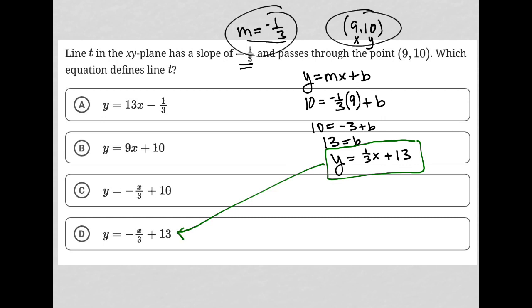They wrote it as negative X over 3. Oh, messed that up. That should be a negative one-third X, right? Negative one-third is my slope. So negative X over 3 is the exact same thing as negative one-third X. So our answer here is choice D.